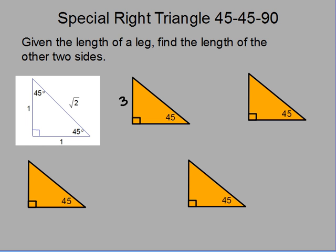So again, if I'm given one of the legs, notice the legs are in a one-to-one ratio. So if this side here is three, that means this side over here is going to be the same exact thing. And then the hypotenuse will just end up being three times the square root of two. And that's it. That's all you have to do with that type of problem.